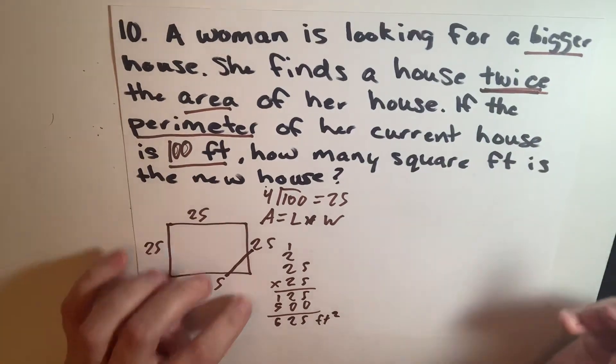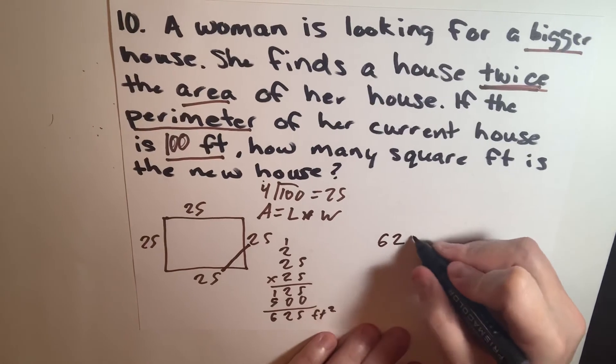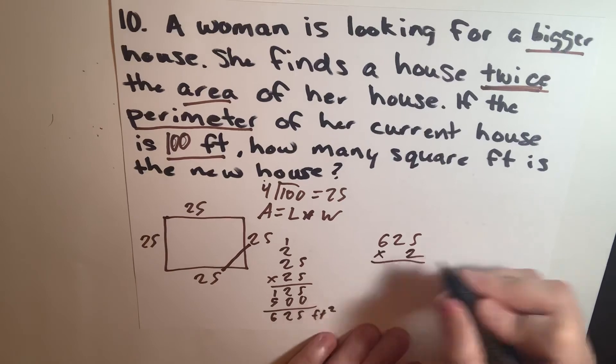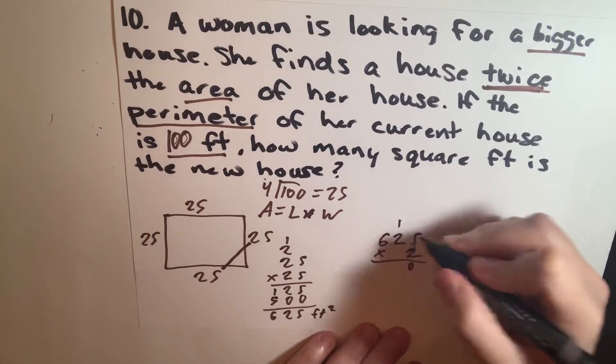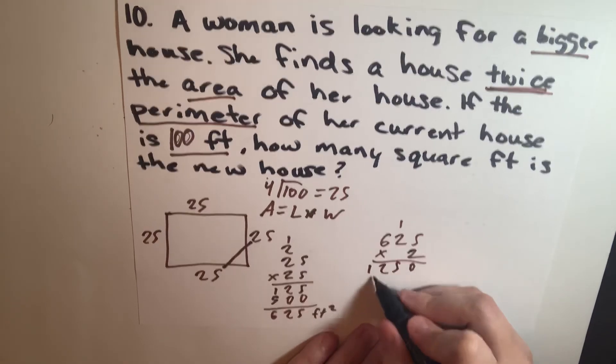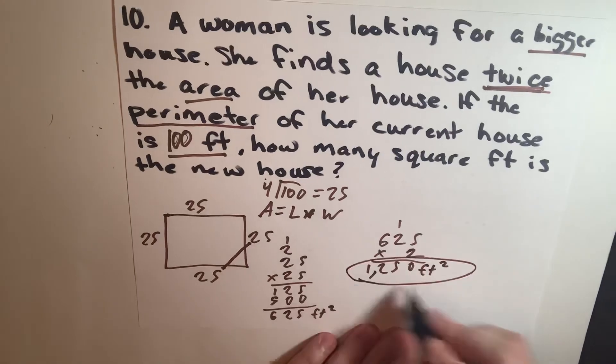So it's going to be 625 times 2 because it's twice the area. So 0, 1, 5, and 12, so 1250 feet squared is your answer.